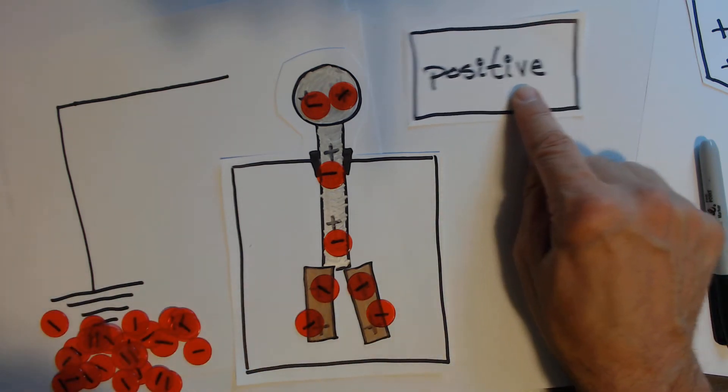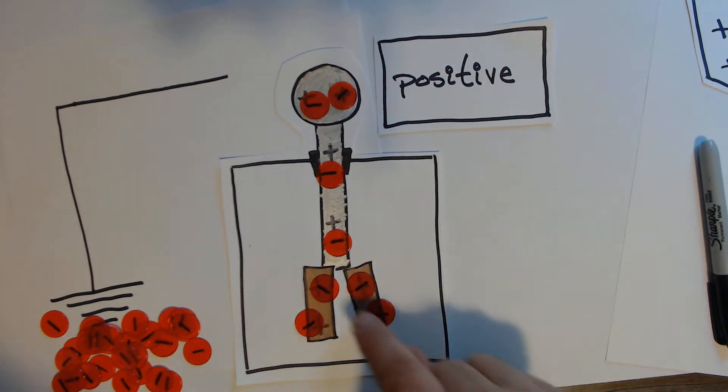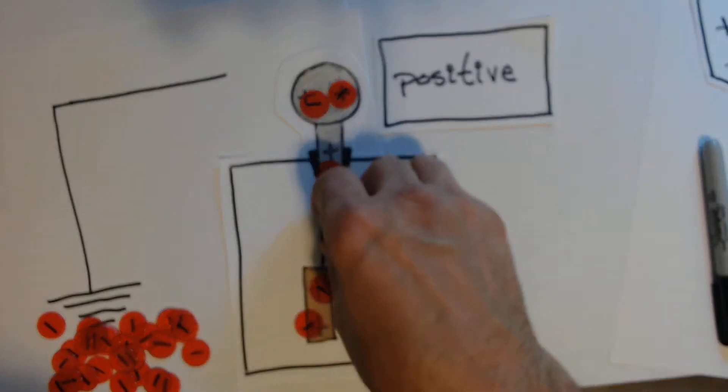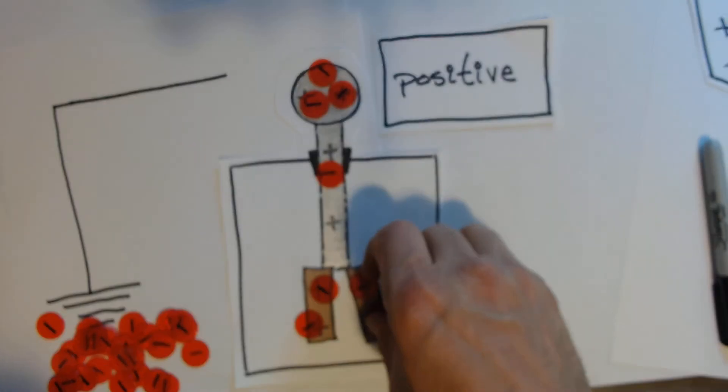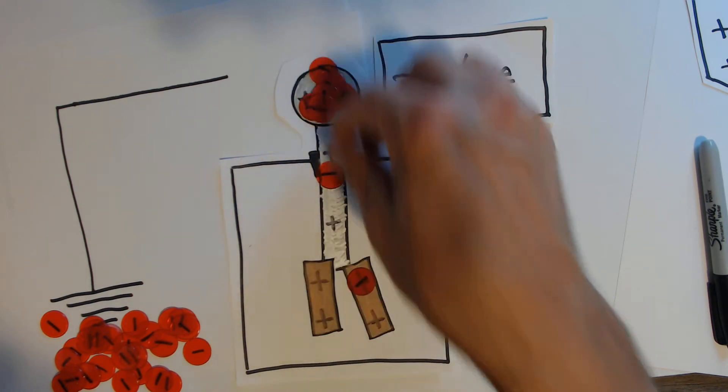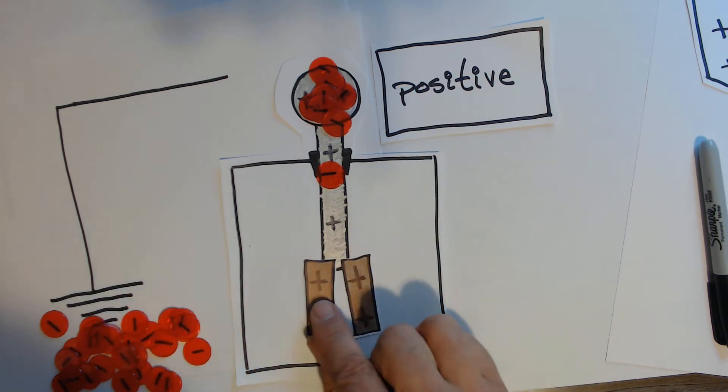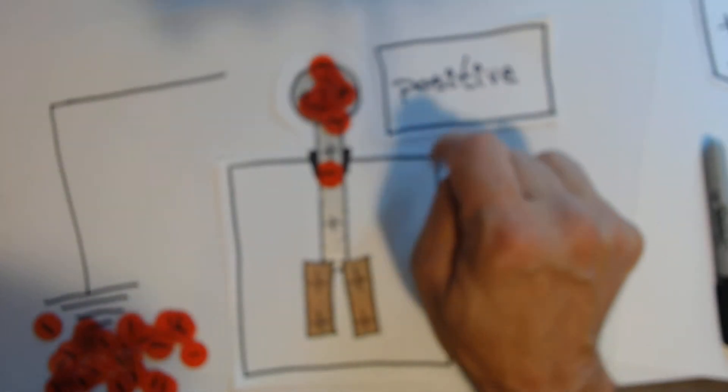But when I bring the positive object close, positive attracts the negatives. And since this is all a conductor, the negatives try to go up to the positive. They can't go across to the positive because it's not close enough. If it's touching then they can go, but right now they're going to the top to get to the positive.